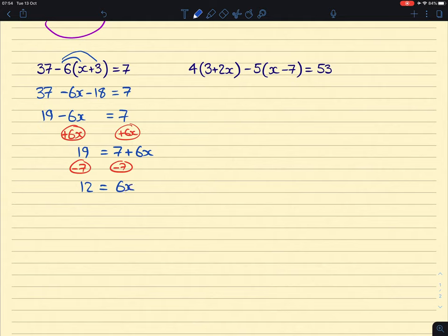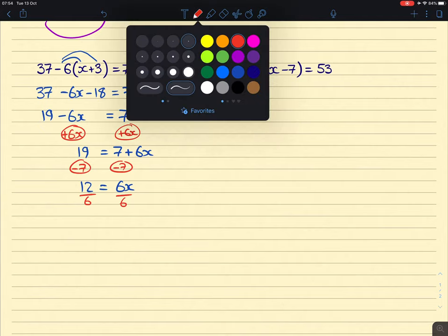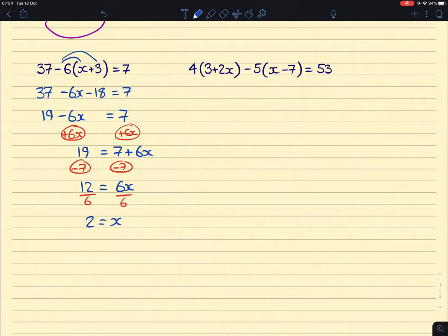And then we're going to divide both sides by 6 to get rid of that 6 that's with the x. And our solution will be 2 equals x.